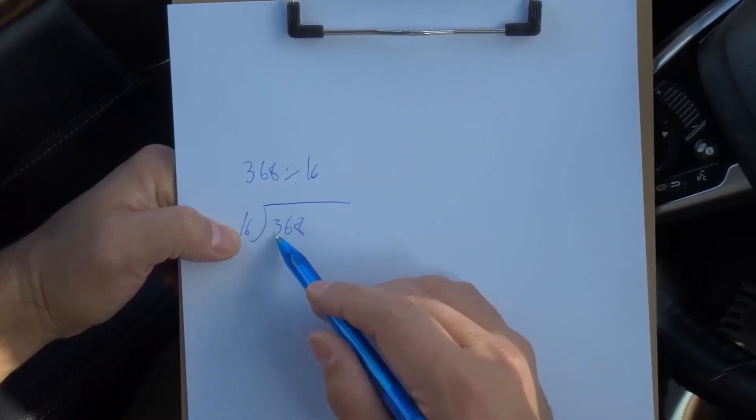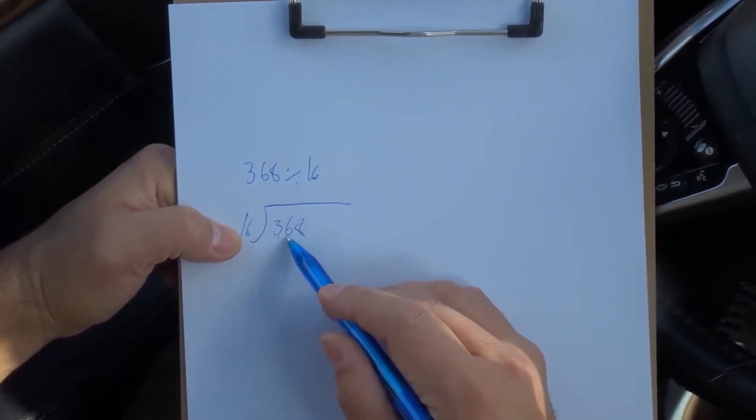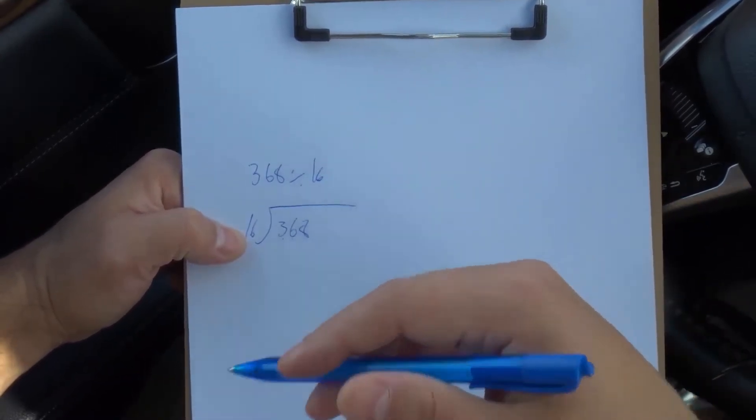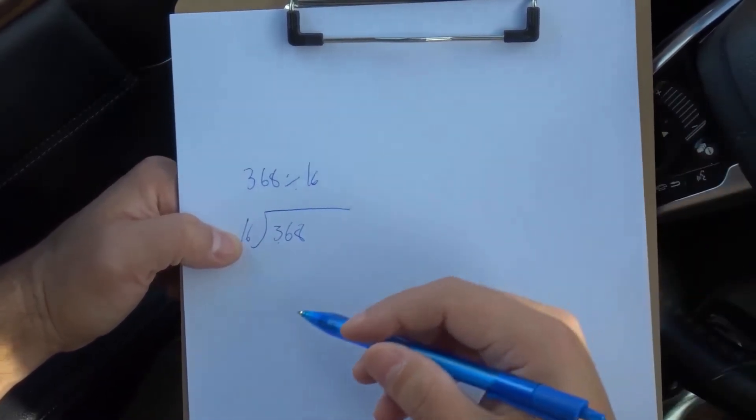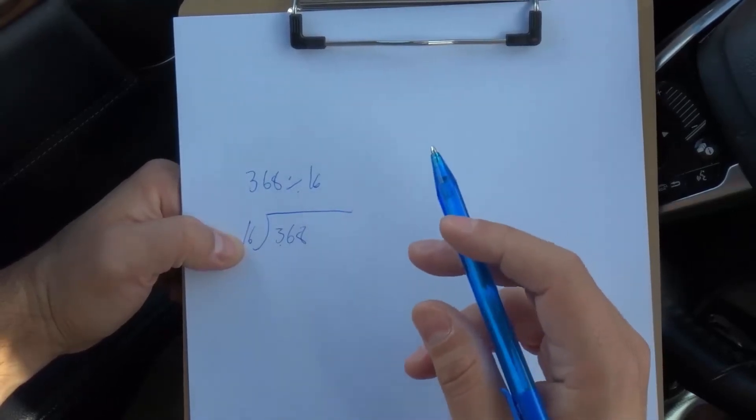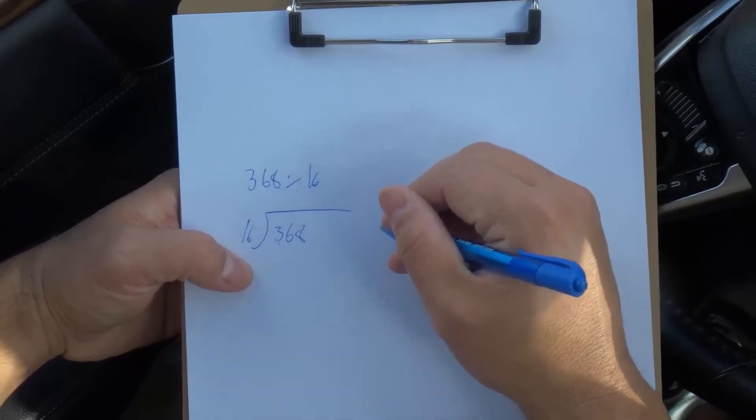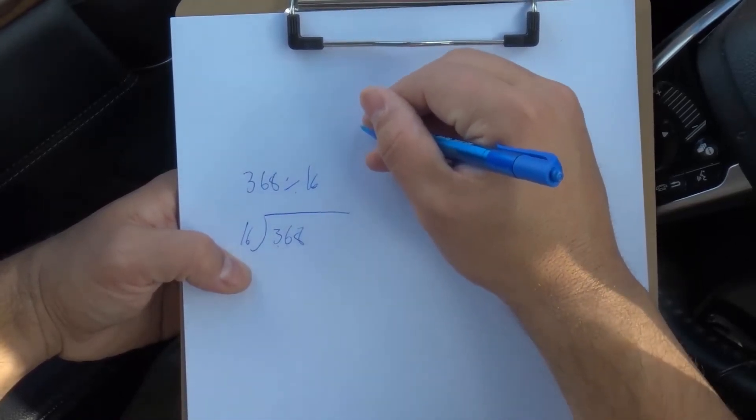What about the first two numbers? So 36. How many times can 16 be multiplied without going over 36? So we want to make sure we're not going over 36. I'm going to just do it up here off to the side.